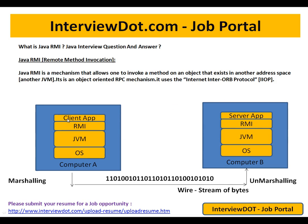For example, a client application on computer A in a Chicago location wishes to talk to computer B in a New York location — a server application. So the client application is running on computer A and the server application is running on computer B in a different location.